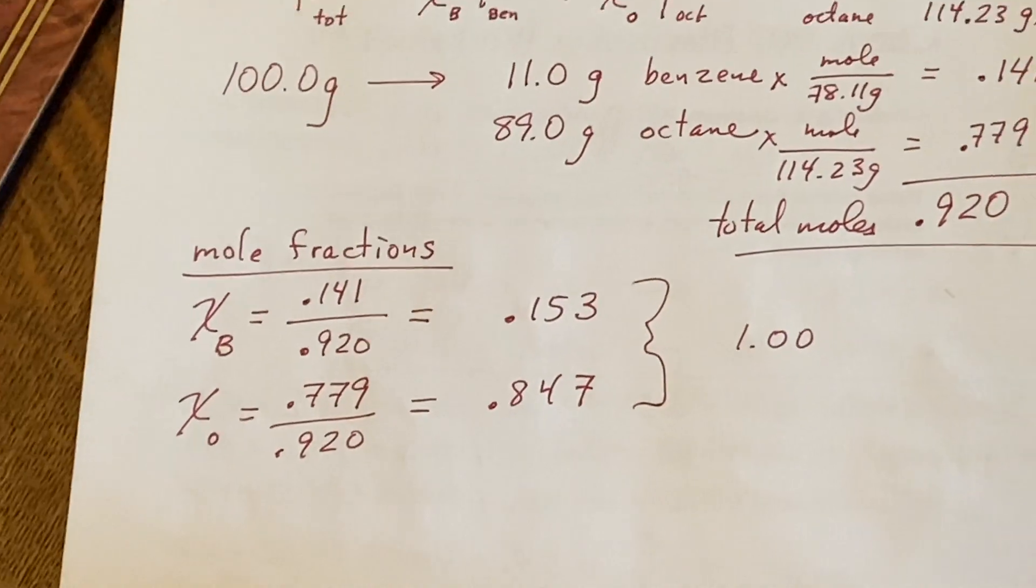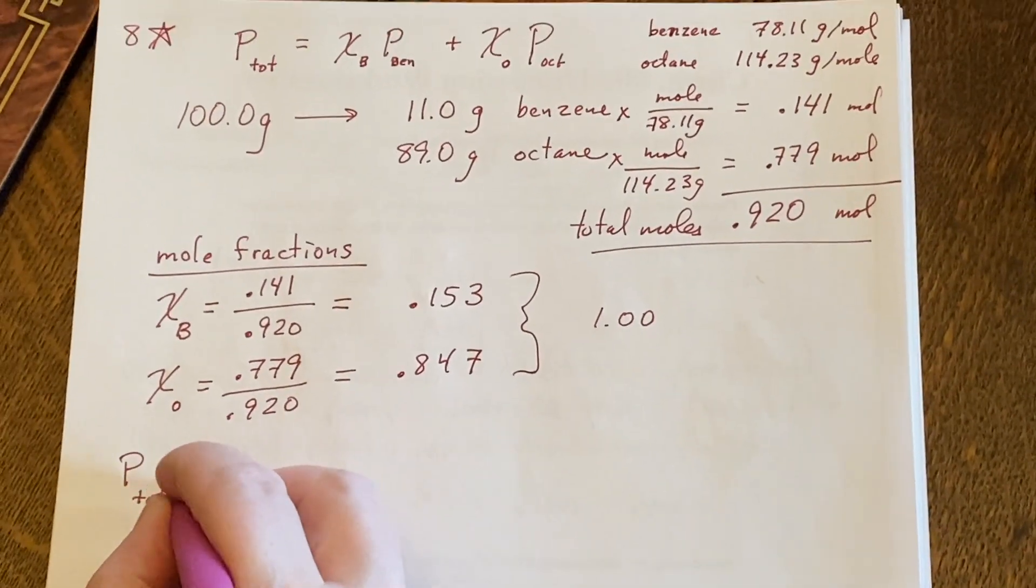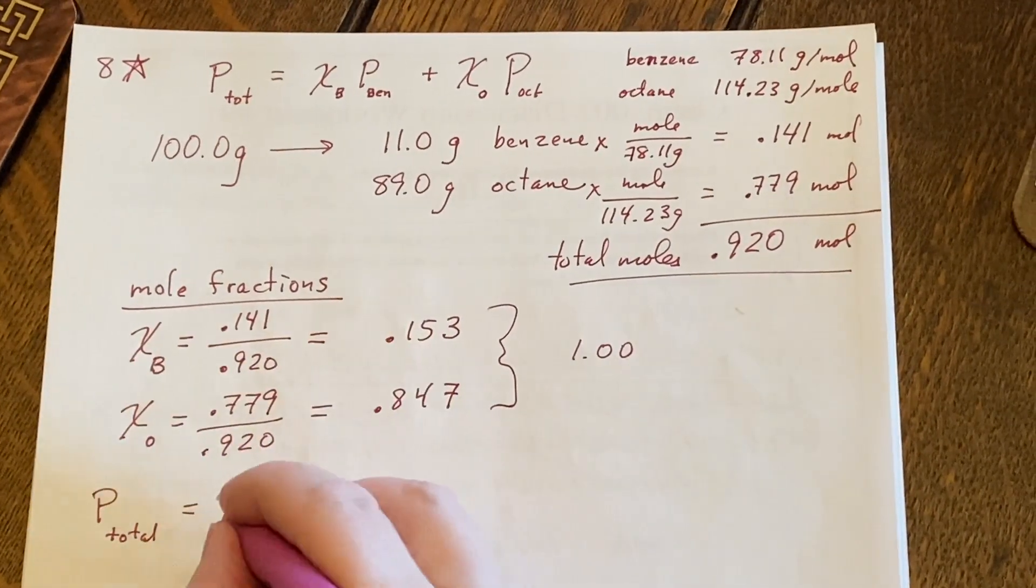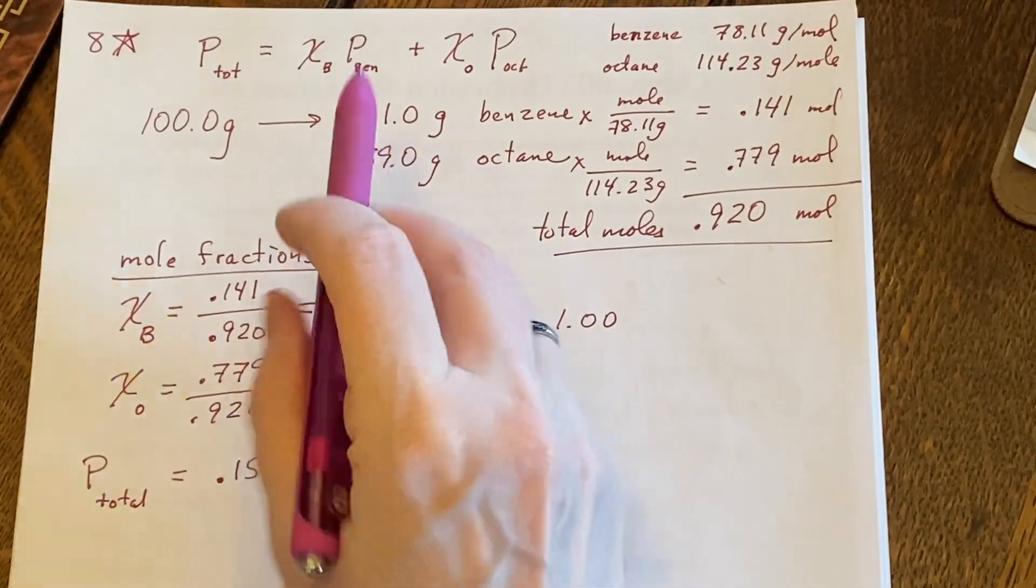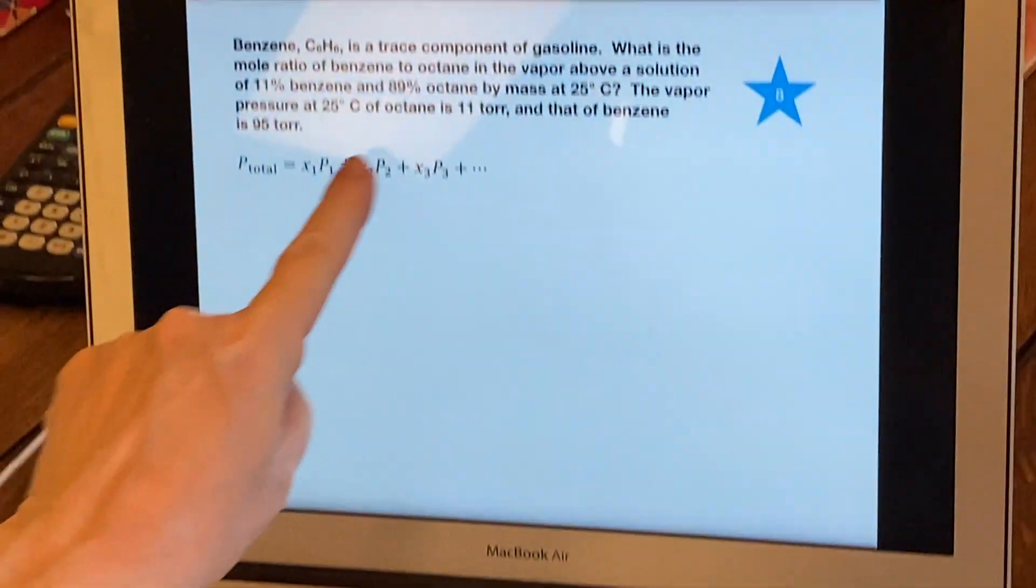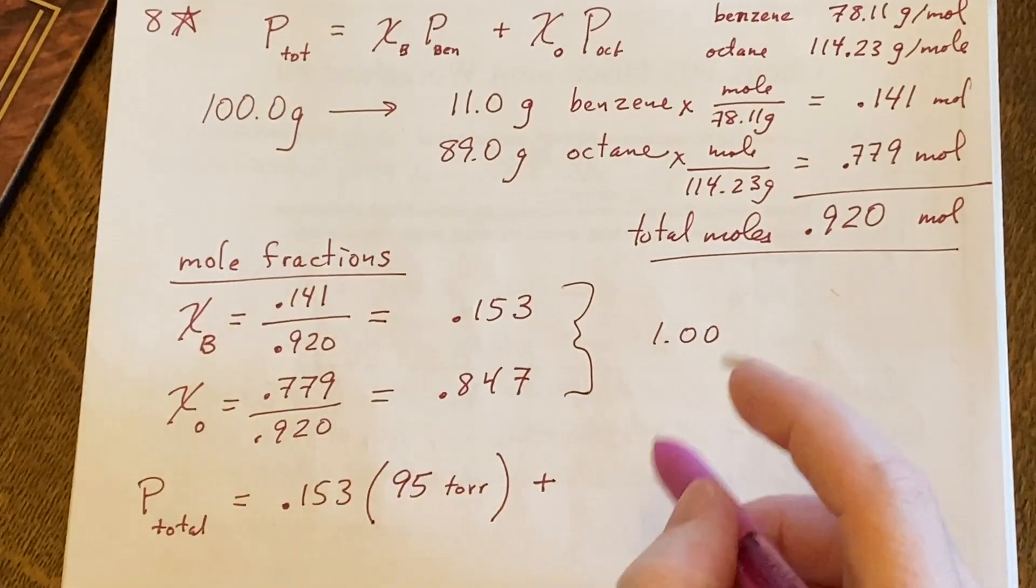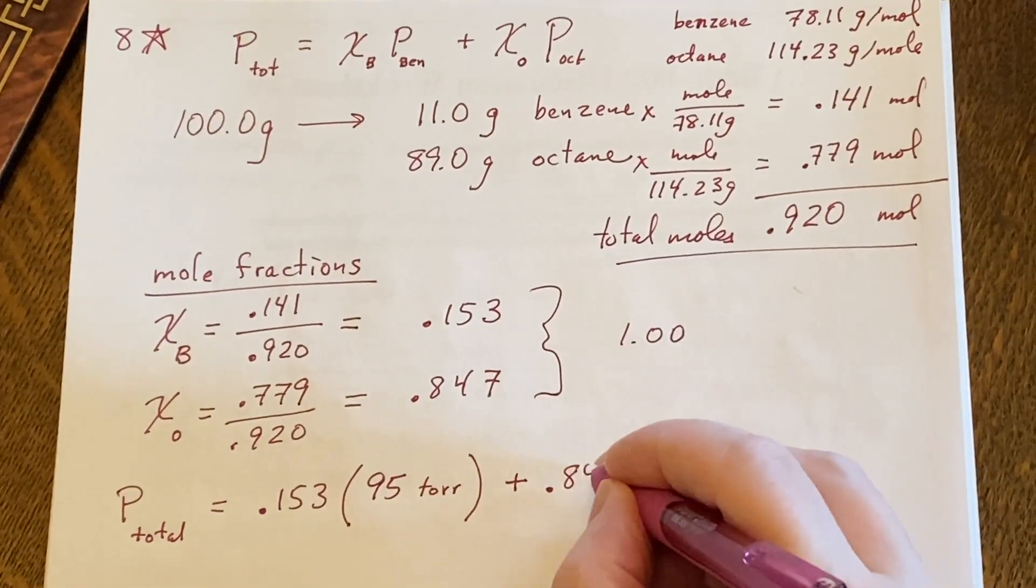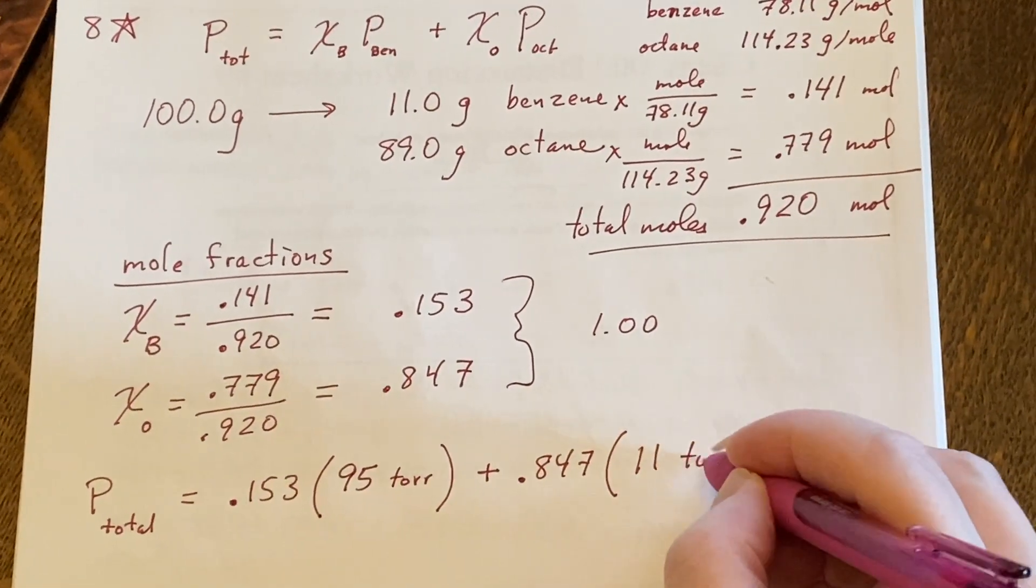And now we'll use Raoult's law. So the pressure total is going to be chi of the benzene, the 0.153 times the pressure from the benzene, which is normally 95 torr. And then I have to add to it chi for the octane, 0.847 times the pressure that the octane would normally give you.